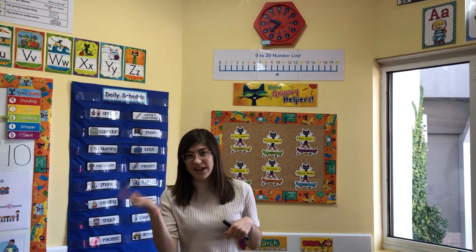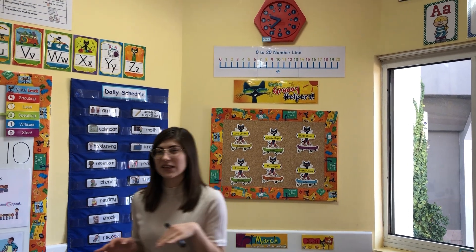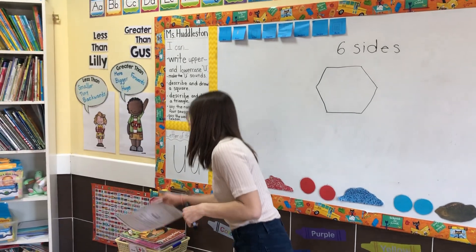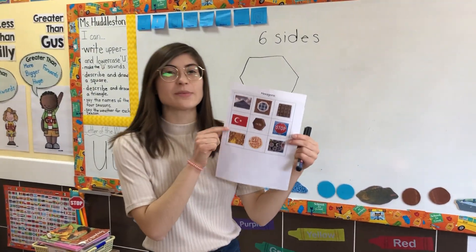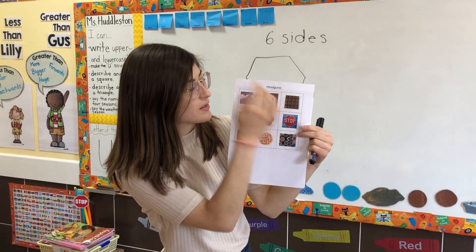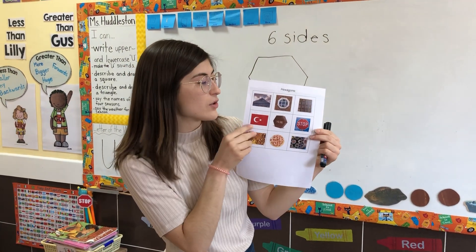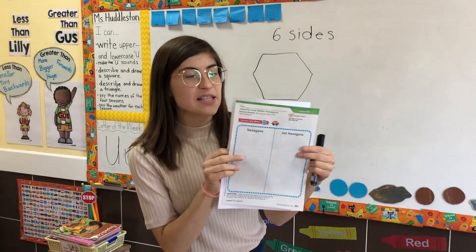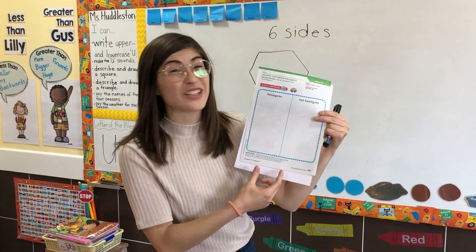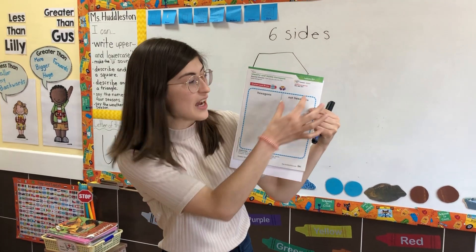So now it's your turn. You get to sort some shapes into shapes that are hexagons and shapes that are not hexagons. So let's take a look. Can you find the shapes that are hexagons? You can cut them out with your scissors and then sort them — the ones that are hexagons here and the ones that are not hexagons here.